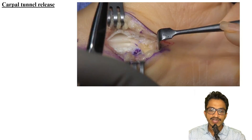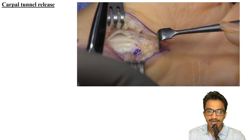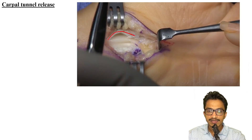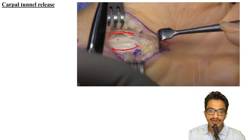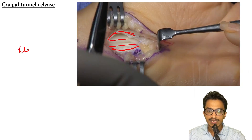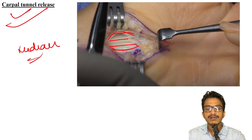If a figure is given with an incision over the wrist joint with a margin of a white ligamentous structure divided and a glistening white vertical structure visible — which is usually the median nerve — this figure points towards carpal tunnel release surgery.